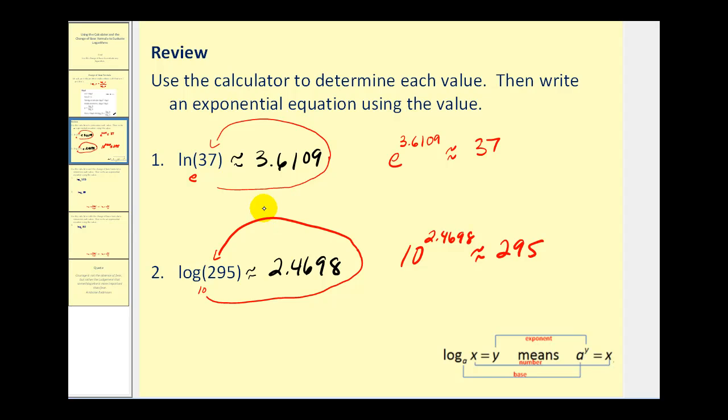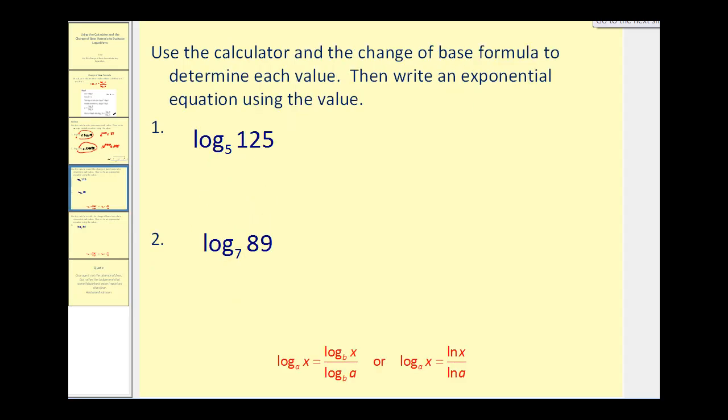Let's go ahead and take a look at some logs now that aren't base e or base 10. So it says use the calculator and the change of base formula to determine each value. Then write an exponential equation using that value. So again, we're going to use either common log or natural log and I'll show both. But let's just go ahead and use common log here. The change of base formula states we can take the log of 125 and divide by the log of the base, log 5.